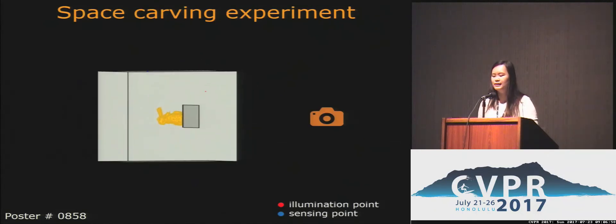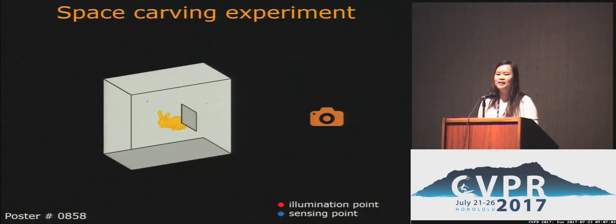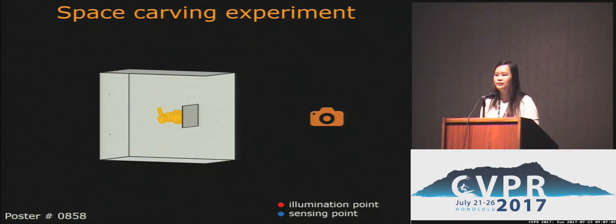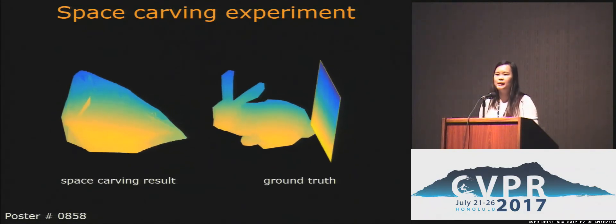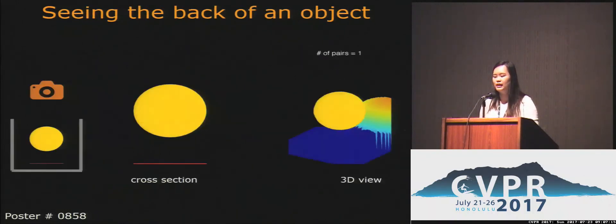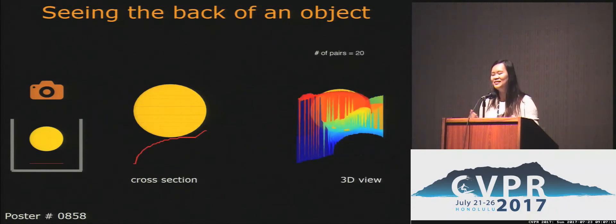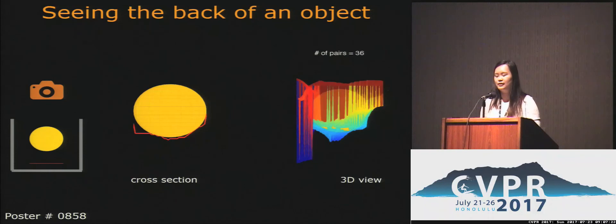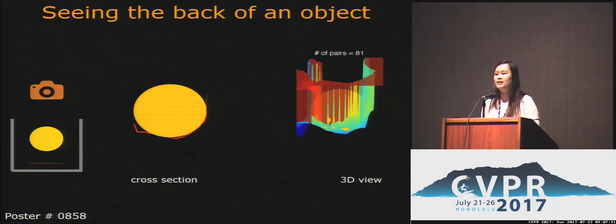I'll show three experiments. In the first experiment, we validate the space carving algorithm. We put a bunny inside a room that is occluded from the camera, and here we show the space left after space carving. You can see that we can identify free space that is not visible to the camera. The second experiment also validates the space carving algorithm. As you can see in the top view, we can only see one side of the object, but with space carving we can see the back of the object.